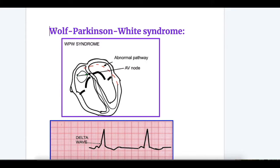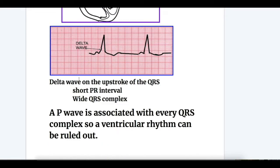Wolff-Parkinson-White syndrome causes both regular and irregular rhythm wide complex tachycardia. In WPW, there is an abnormal focus of impulse generation — the bundle of Kent — that first excites the atria and then the ventricle without passing through the AV node, so there is no delay. EKG features of WPW include: a delta wave on the upstroke of the QRS, wide QRS complex, short PR interval, and a P wave present in all complexes.